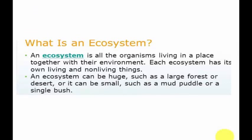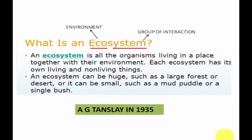An ecosystem consists of two words: one is 'eco' and another is 'system.' Eco means environment, and system is a group of interactions where a lot of interactions are taking place. So together, if we combine the terms eco and system, it becomes that environment where a lot of interactions are taking place — that is called an ecosystem. This is the interaction between living and non-living organisms, between the nutrients and the gases. The definition of an ecosystem is: an ecosystem is all the organisms living in a place together with their environment.